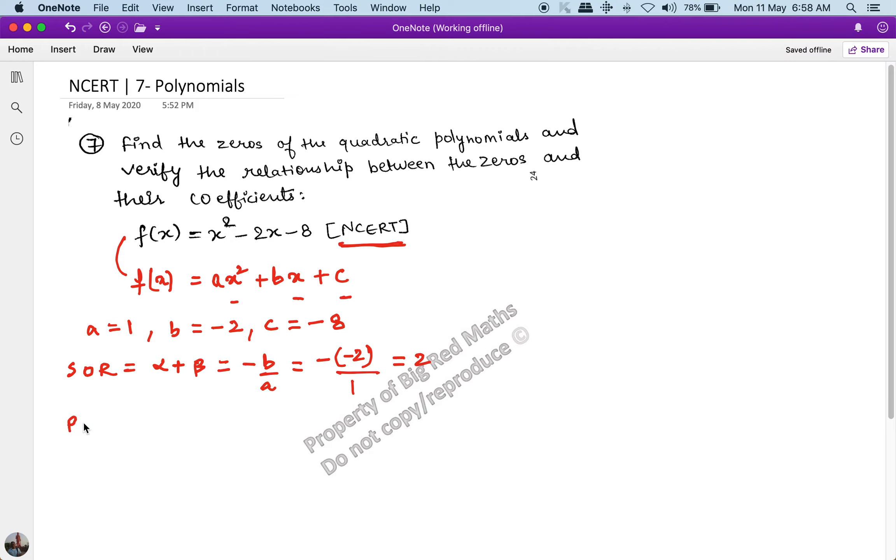And going by the product of roots, which is equal to αβ, this should be equal to c/a. And c/a is equal to -8/1, which is equal to -8. So we have to see that first we derive the value of α and β, and then validate that α and β satisfy these conditions.